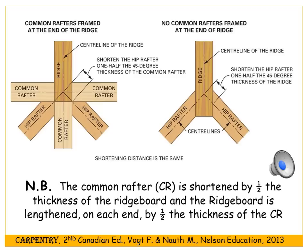This diagram focuses on the end of the roof. You can see the ridge board being lengthened by half the thickness of the common rafter, and the common rafter being shortened by half the thickness of the ridge. The hip rafter, coming in at a 45 degree angle, is shortened by half of the 45 degree thickness of the common rafter — essentially the diagonal of a three-quarter by three-quarter square, which is one and a sixteenth inches. So using inch and a half lumber, the hip rafter is shortened by one and a sixteenth.